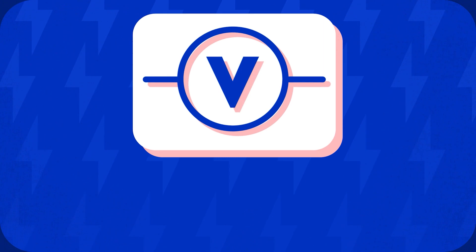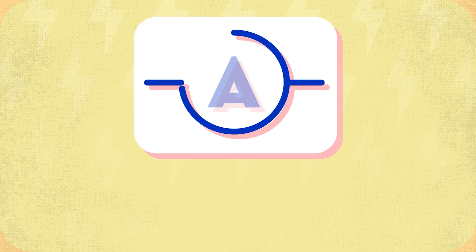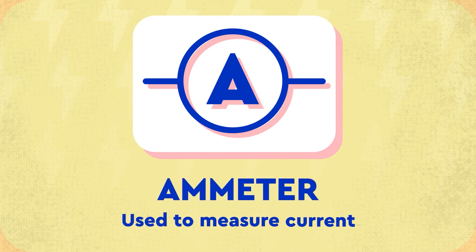A voltmeter is used to measure the potential difference of a component. An ammeter is used to measure the current.